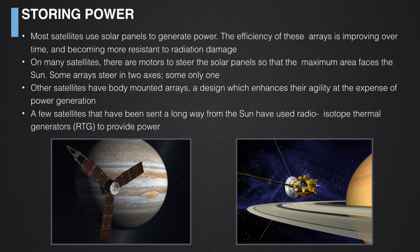All satellites need power, and most satellites in orbit around the earth use solar panels. As we have moved from silicon-based semiconductors to gallium arsenide, the efficiencies of solar cells have improved, meaning we can do more with the satellite for a given array area. A lot of satellites have steerable solar arrays, but at Surrey we have tended to use body-mounted solar panels, which allow the satellites to have considerably more agility than their bigger cousins, though this limits the amount of power you can generate.